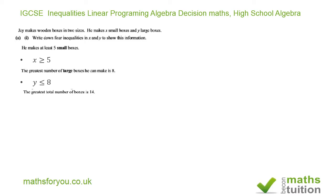The next condition: the greatest total number of boxes is 14. For example, he can make three x boxes and nine large boxes, which is 12 — that's okay. He cannot make more than 14 in total. So the inequality for that is x + y ≤ 14.